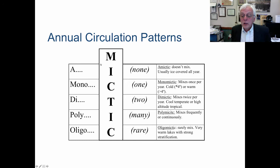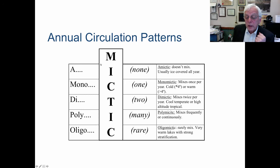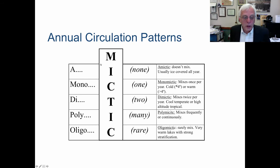Dimictic lakes mix twice per year and are usually found in cool temperate zones or high-altitude tropical systems. Polymictic lakes mix very frequently or even continuously - 'poly' meaning many - and we're seeing more polymictic lakes than we used to because the climate is getting warmer and seasons are becoming stormier. Oligomictic lakes rarely mix - usually very warm lakes with strong stratification and only rare stormy periods, or chemically stratified lakes that only mix with massive energy input.